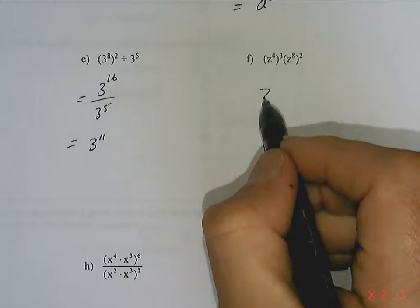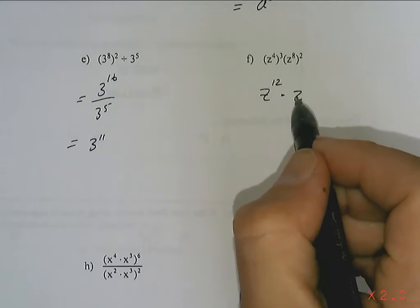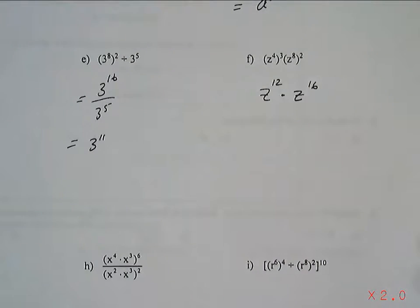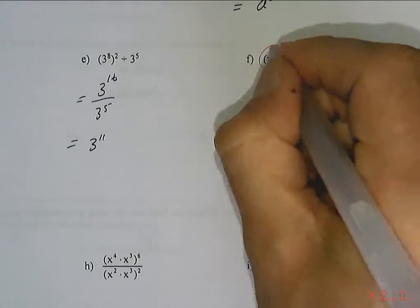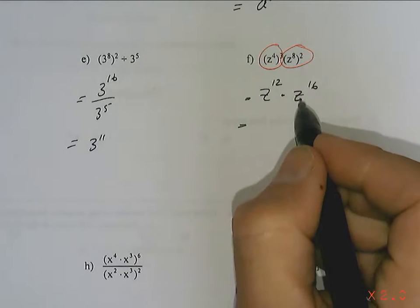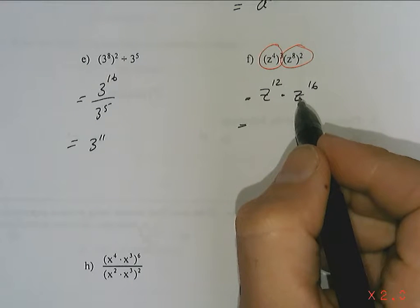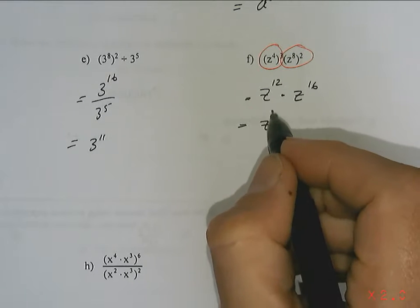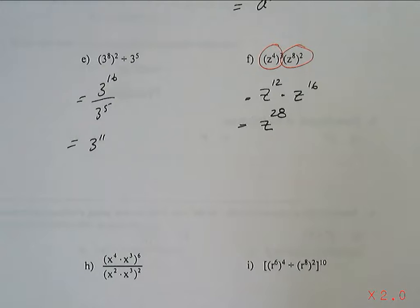Z's. So, I got Z to the 12 times Z to the 16. So, did you see how I did that? I did this one. And then I did that one. And now I'll put them together. But it's a different rule for putting them together, right? It's going to be addition this time. So, now it's Z to the 28.